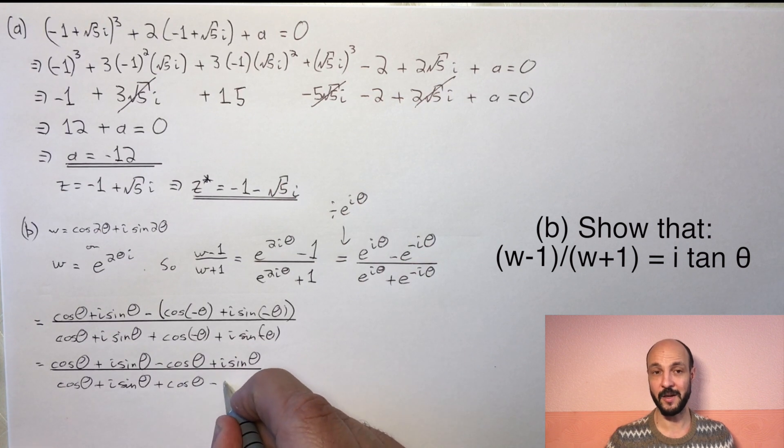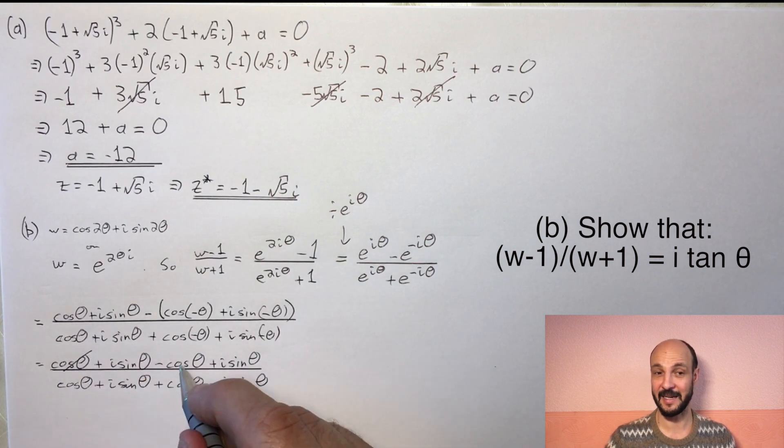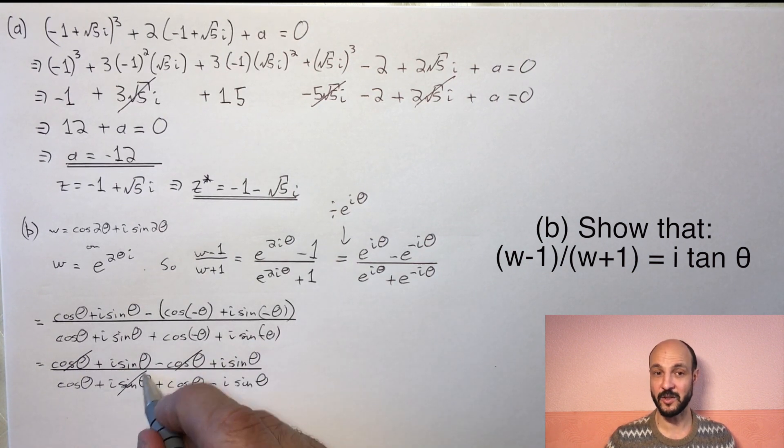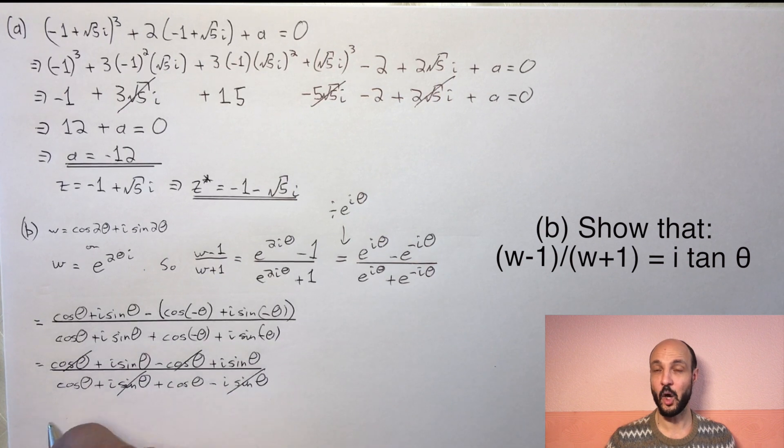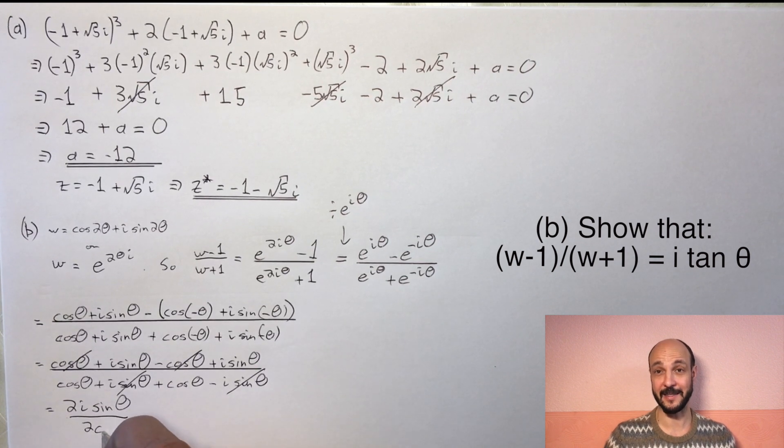Then if we look carefully on the top, the cosine thetas cancel out and on the bottom, the i sine thetas cancel out. And that just leaves us with 2i sin θ over 2 cos θ. The 2s cancel out and we're left with i sin θ over cos θ, or i tan θ.